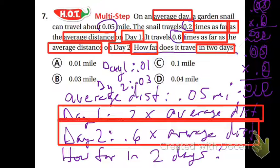So the question is how far in two days. So I just add those two days together. And I get 0.04. And that is how I get D as my answer. Four hundredths of a mile.